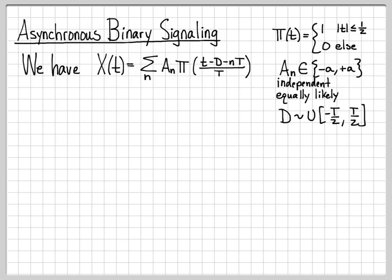Also, don't forget about the random quantity d. This is the amount of random displacement we have with respect to the time origin. It is a uniform random variable between minus t over 2 and t over 2.